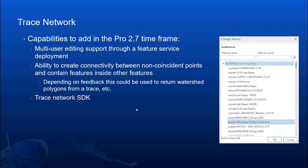Going forward, there are additional capabilities we still want to add. One is multi-user editing through feature services and branch versioning, the same way the utility network is supported. That will also give you the ability to use the trace network offline through Collector and other applications. In addition, we want to support connectivity and containment associations — the ability to connect two point features without an actual edge between them, or to contain one feature inside another, such as streams inside a conduit or marking what watershed polygon a stream is in. We also want to create an SDK for the trace network for any customization users might want to do.